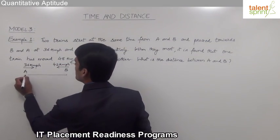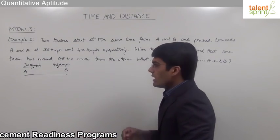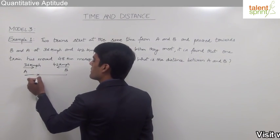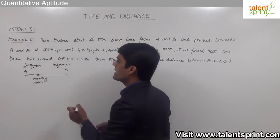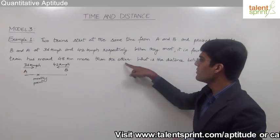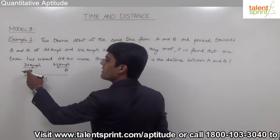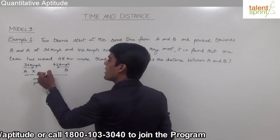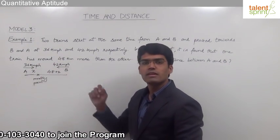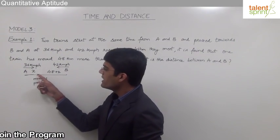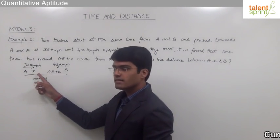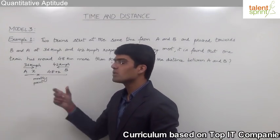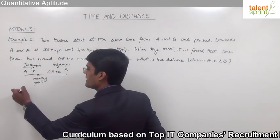Let us assume this is the path between the two points A and B. When the two trains are moving in opposite directions, they meet at some point in between — let us assume that is the meeting point. At this meeting point, one train has moved 48 km more than the other. Let us assume the distance covered by the first train up to this point is x, so the distance covered by train B up to that point will be 48 plus x. We are supposed to find the total distance between the two stations A and B, so let us assume that total distance is D.